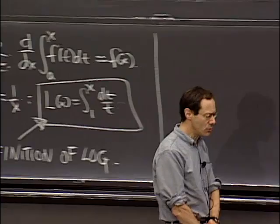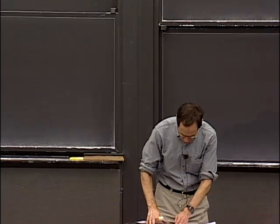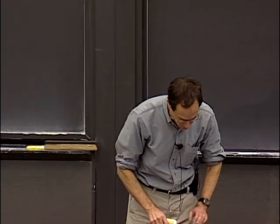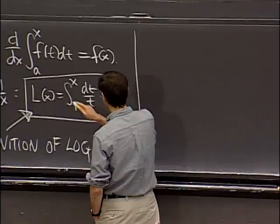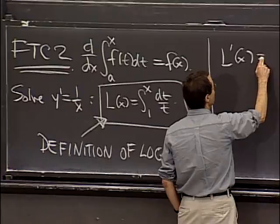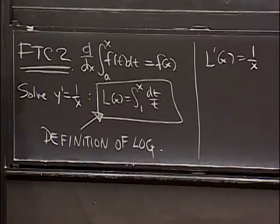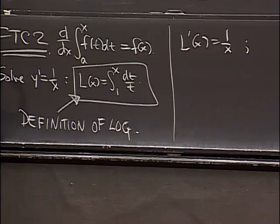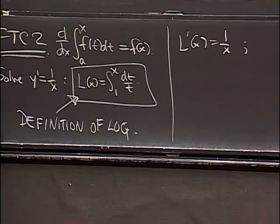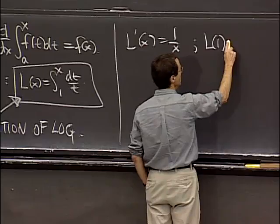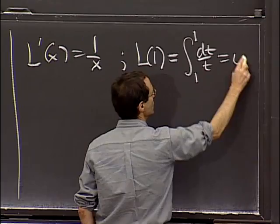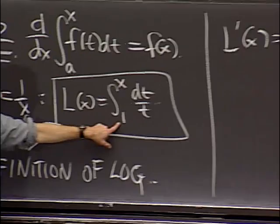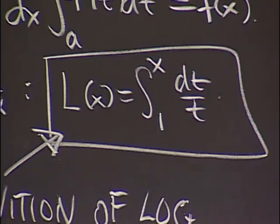The first property of this function is already given: its derivative is 1 over x. We get a lot of information just out of the fact that its derivative is 1 over x. The other thing we need to nail down the function, besides its derivative, is one value of the function — it's only specified up to a constant. We nail down that constant by evaluating at x equals 1: the integral from 1 to 1 of dt over t is 0.